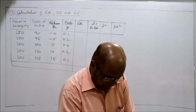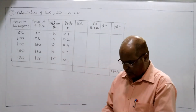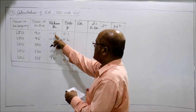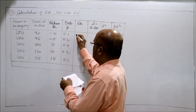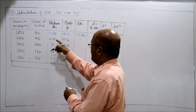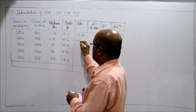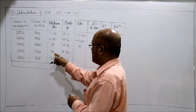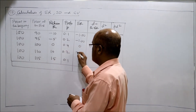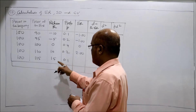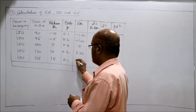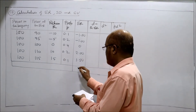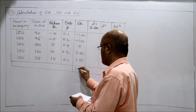Now we multiply to find out the expected return. Minus 10 into 0.1 is minus 1. Minus 5 into 0.2 is minus 1. 0 into 0.4 is 0. 10 into 0.2 is 2. Then 15 into 0.1 is 1.50. The total is 1.5.